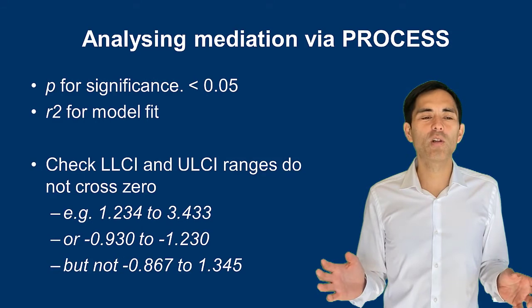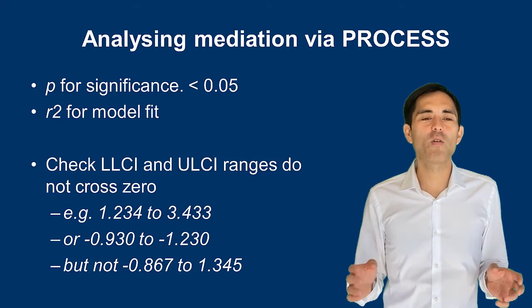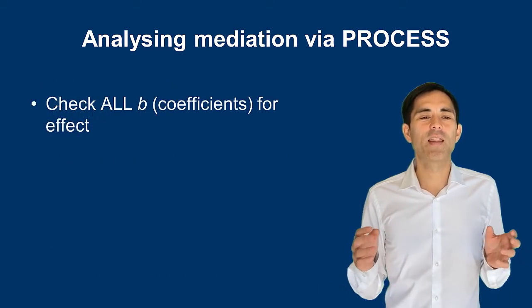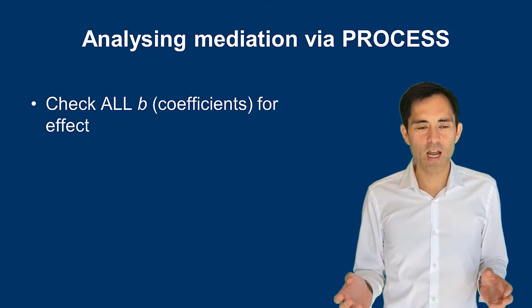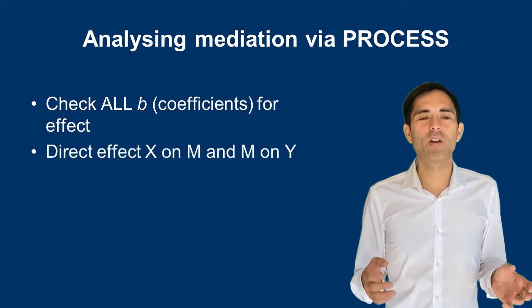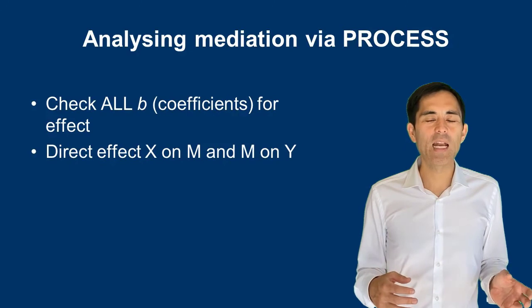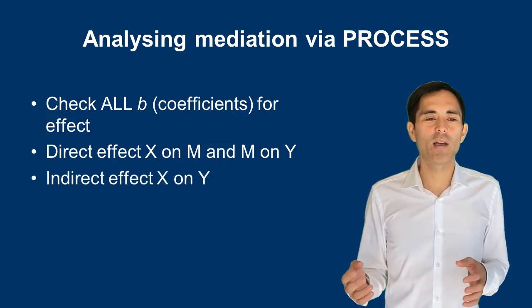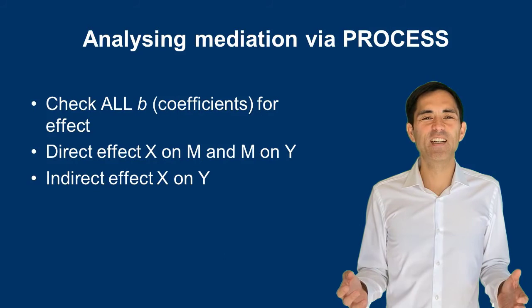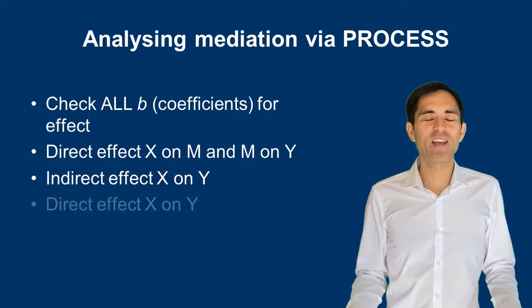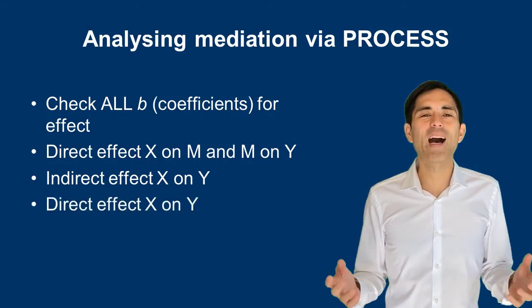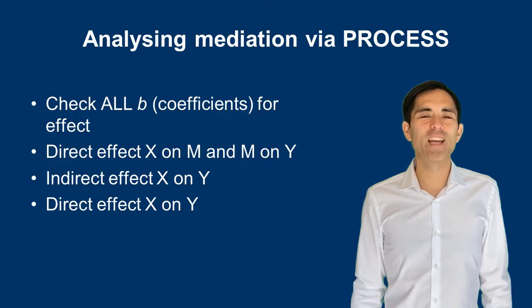Looking at the whole model, you would check all beta values and coefficients and their effects. You would look at the direct effects — X on M and M on Y — as well as the indirect effect of X on Y to understand the relationship. Then also the direct effect to understand whether you have a full or partial mediation effect.